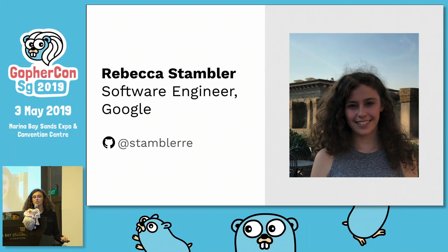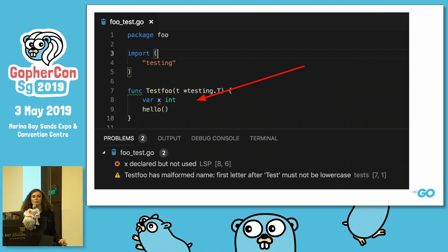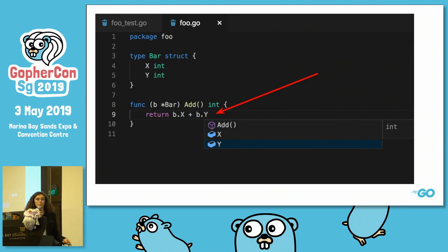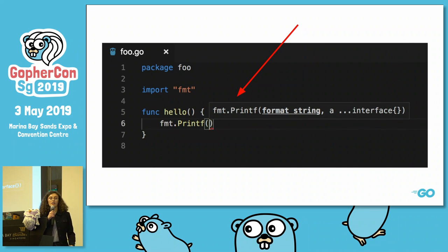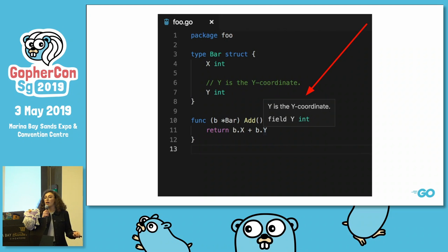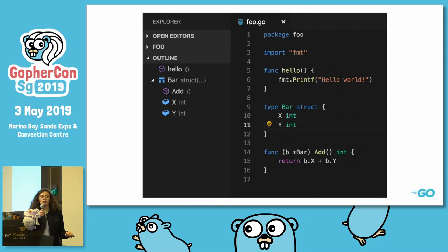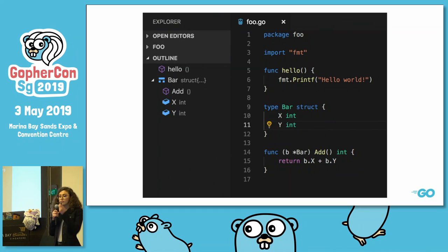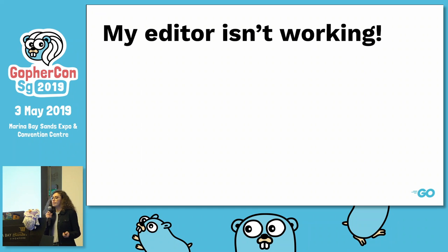When I'm coding, I usually want to be able to see the errors in my program. I want to have auto-completion so that I can type a bit faster. I want to have signature help in case I forget the parameters to the function that I'm calling. I want to be able to jump to the definition of a variable, see its documentation when I hover over it, and get an outline of my program so that I know what types and functions I've already declared in my code.